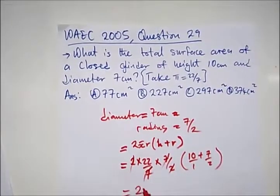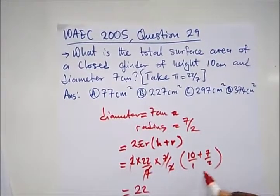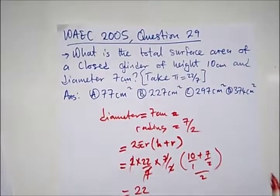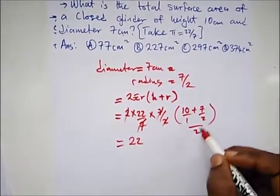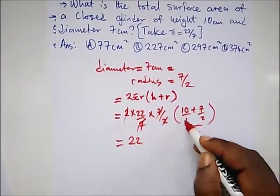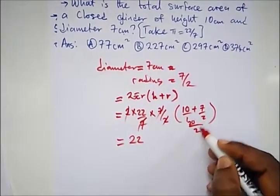So this will cancel this, this will cancel this, so what are we left to? 22. And if we add this, what are we going to get? LCM is 2. 2 in 2 is 2 times 10, that's 20. 2 in 2, that's 1 times 7, that's 7. So we have 27 over 2.